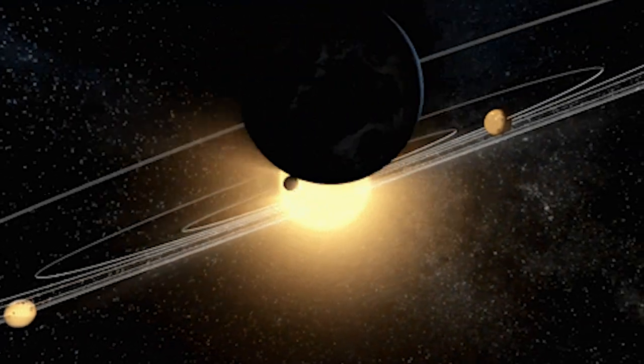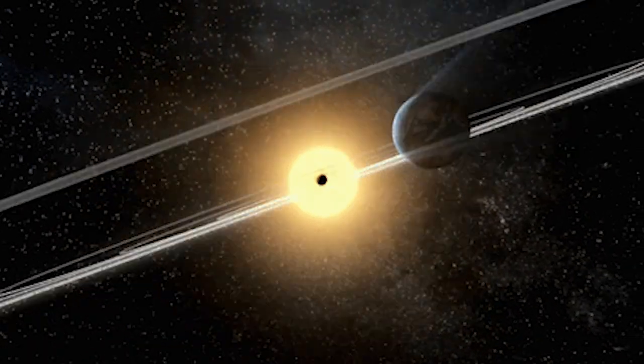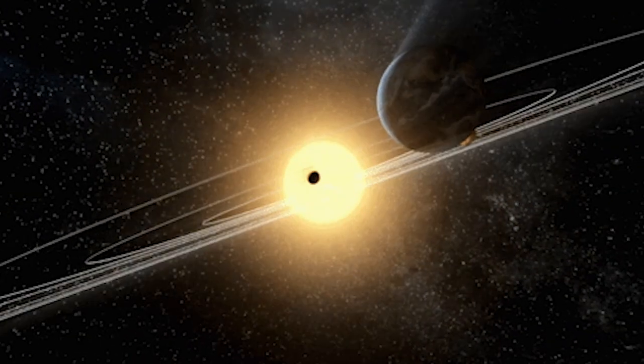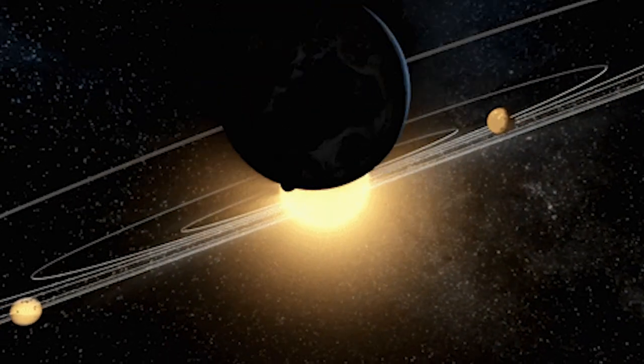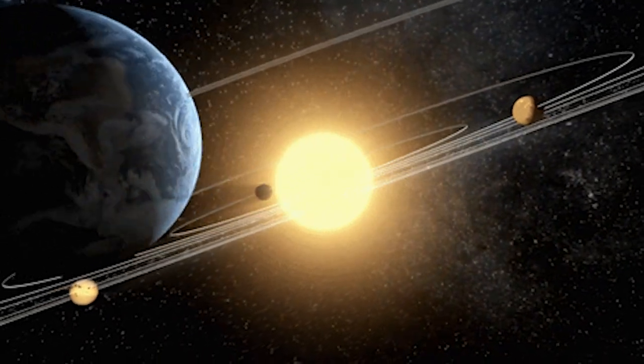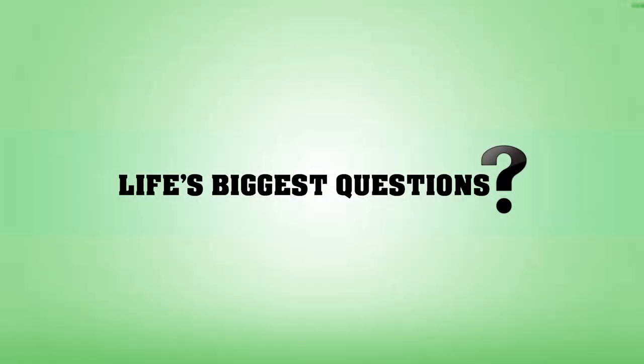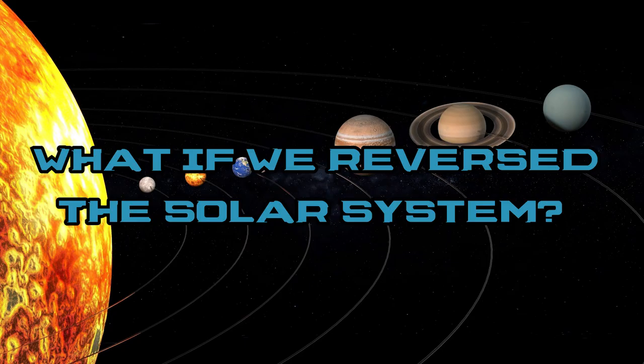But what if, on some massive galactic whim over a bet or something like that, the powers that be decided to see what would happen if we reversed the order of the solar system? Wait, what? Yeah. This one's about to get a little bit messy. Hello internet, what's going on, and once again welcome back to the most inquisitive channel on YouTube, Life's Biggest Questions. As per usual, I'll be your disembodied floating voice Jack Finch, as today we curiously ask the question, what if we reversed the solar system? Roll the clip.